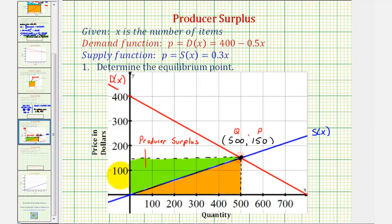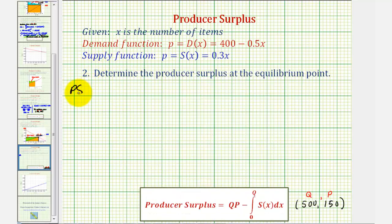So we'll find the area of this rectangle and subtract the area under the supply function over the interval from 0 to 500. So the producer's surplus is going to be equal to q times p, which is 500 times 150, minus the integral of s of x or 0.3x from 0 to 500.